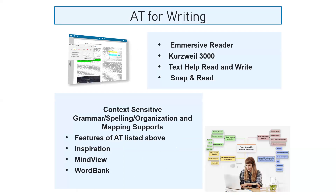For assistive technology for writing, Kurzweil 3000 and Immersive Reader can be used for writing as well as reading. Dictation is often easier — you input with your voice. Word prediction is another tool where you start typing a word and see options to select. These softwares typically used for reading can also be used for writing.